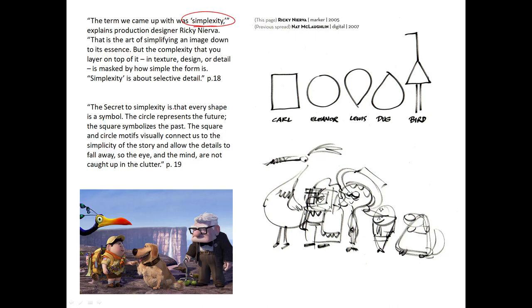And then you can see here how in that thinking, every shape is a symbol. Every shape means something. Circle means the future, square means the past, and that the contest between those two is a lot of the tension.